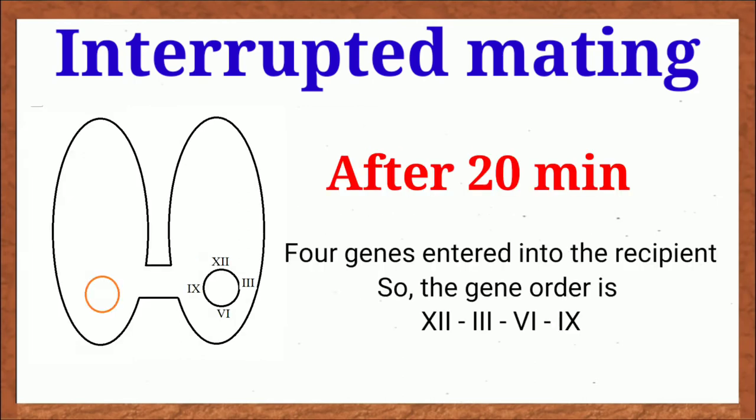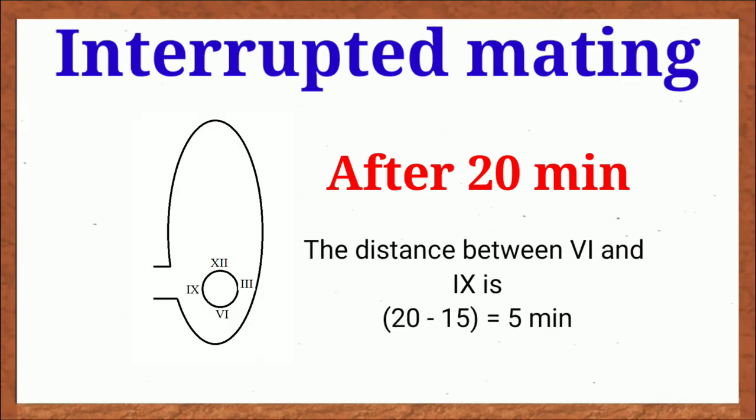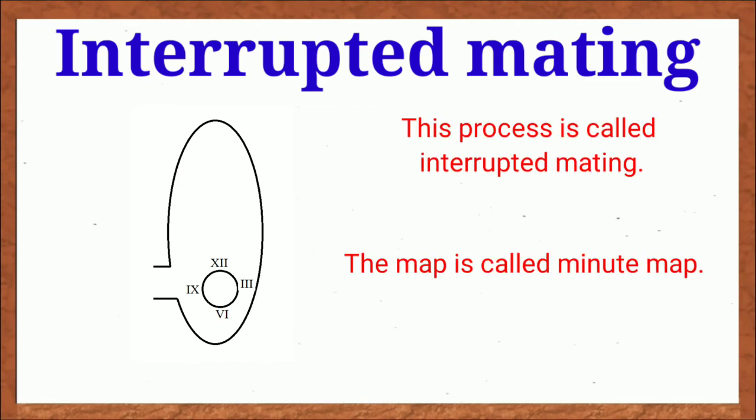So third gene is 6 and at 20 minutes, gene 9 will enter. So 9 is situated last. So the map will be like this. This process is called interrupted mating and the map is called minute map.